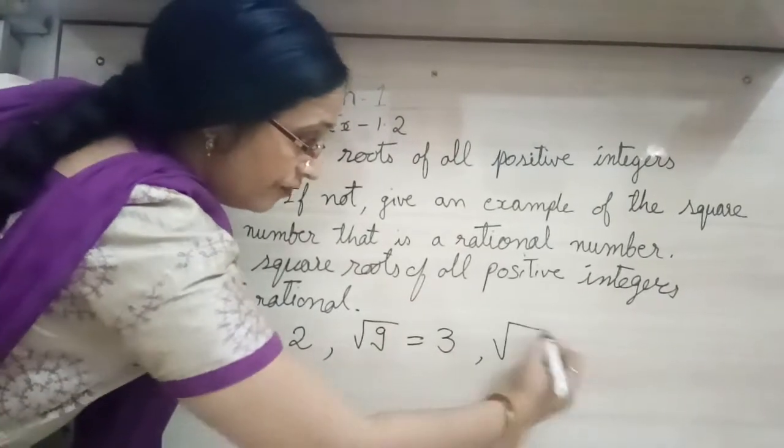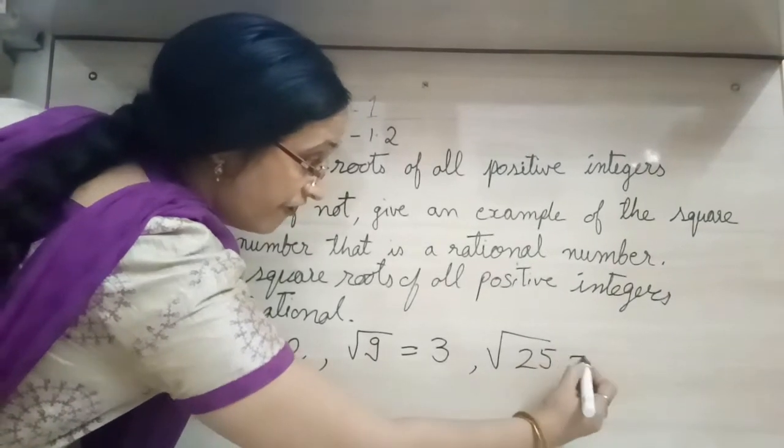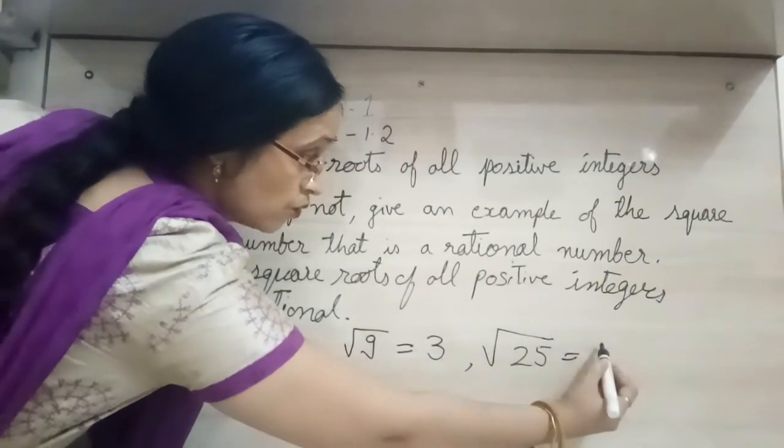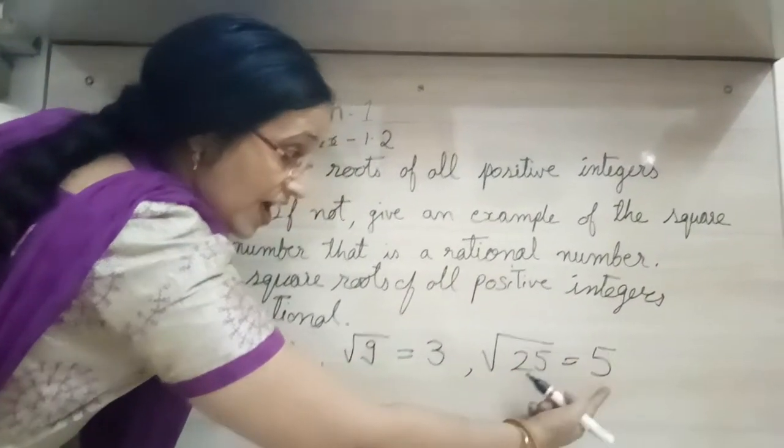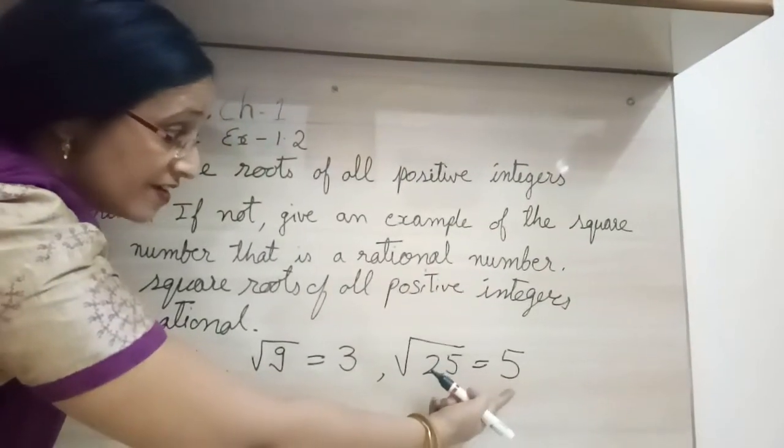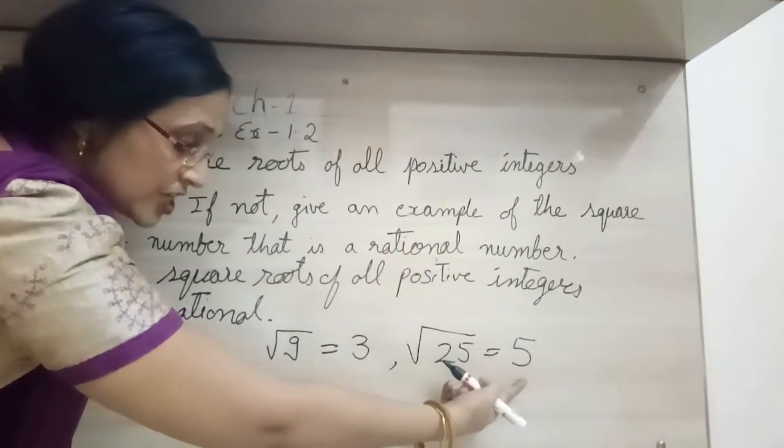You can take any perfect square number, 25. If I take square root, what answer will come? 5. So it is a rational number, not an irrational number.